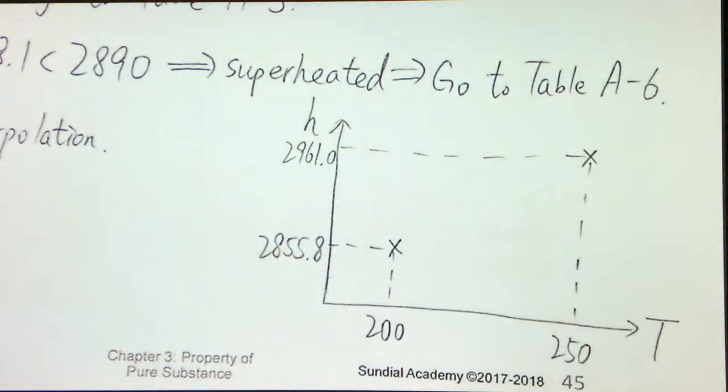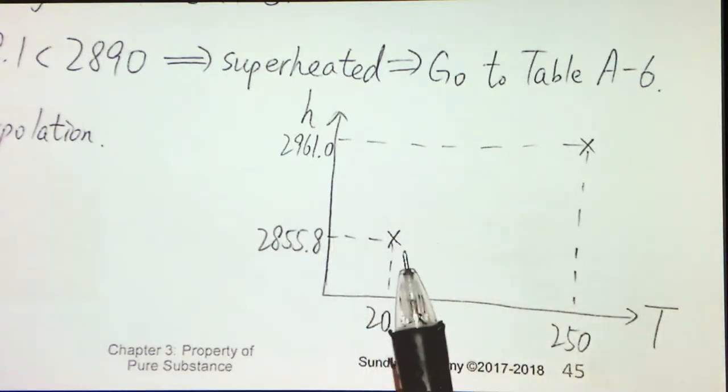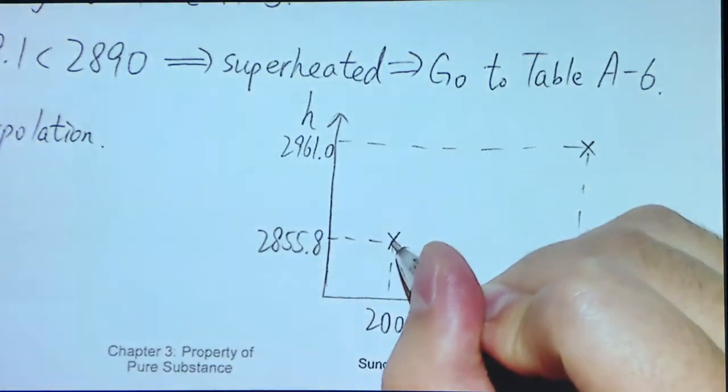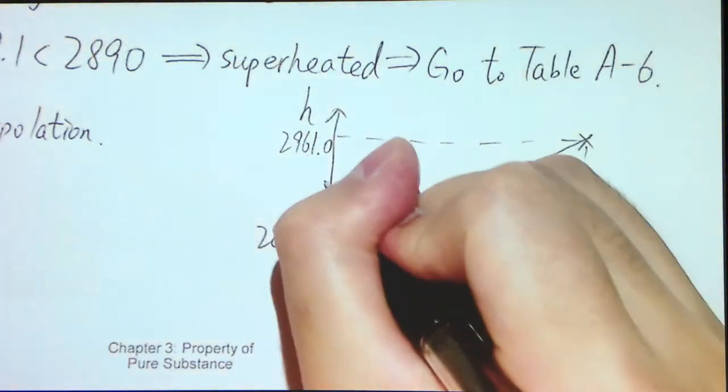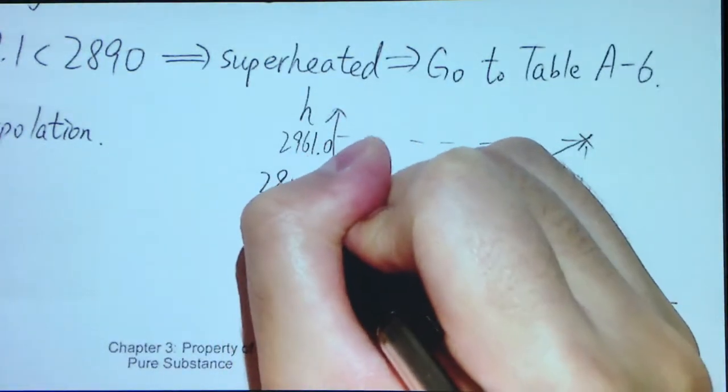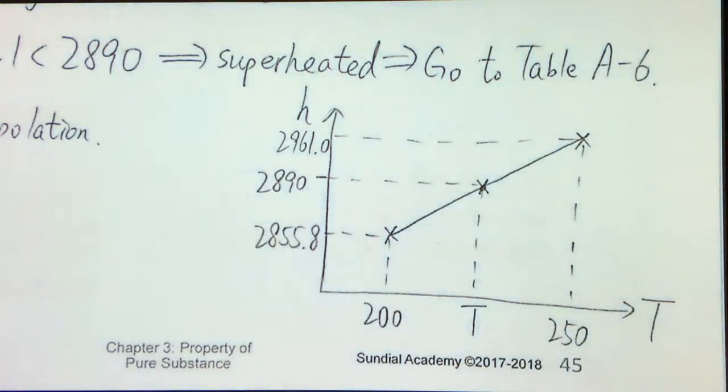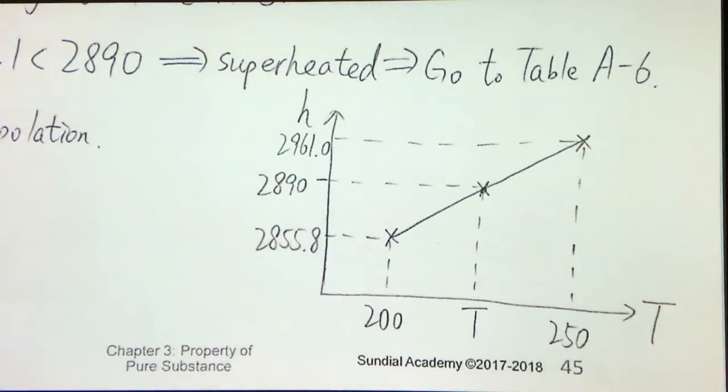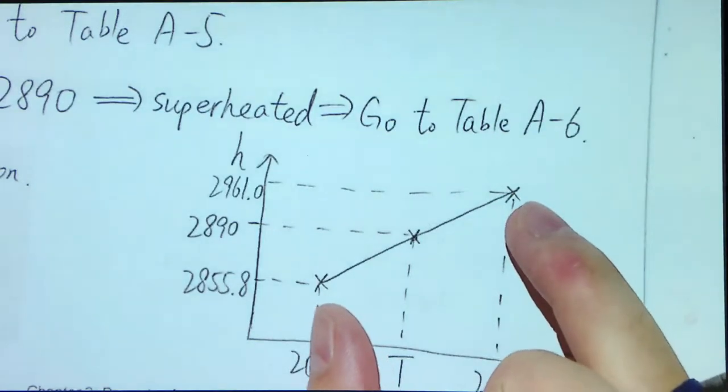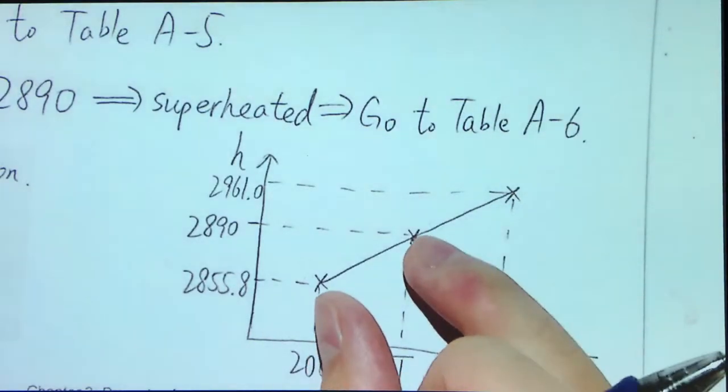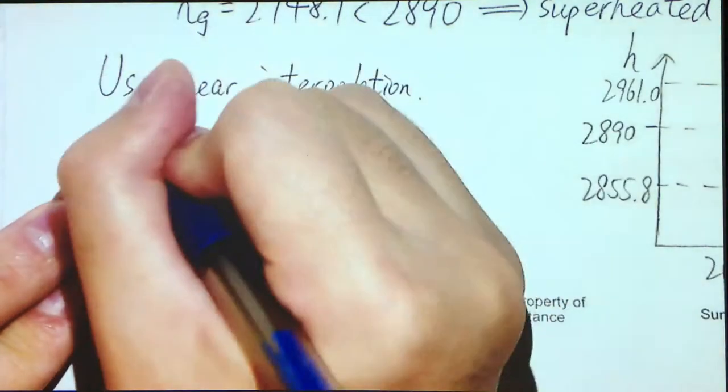Although we do not know the actual curve or the actual variation of this h with respect to T, we know that it is increasing. So we will use a straight line to link these two points up. And what we need to find is at 2890 kJ per kg, what's the corresponding temperature? As I have illustrated, we will use one property in a straight line graph. That is slope equal to slope. We will take two known points to calculate the slope, and then we find out the slope of these two points and equate to the known slope. And then we can find out this T.